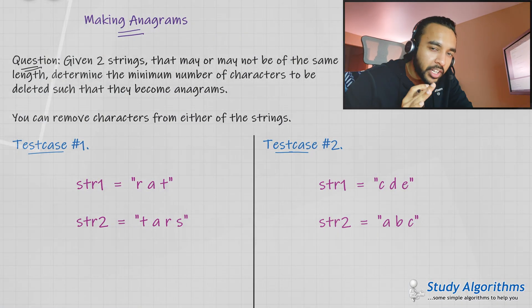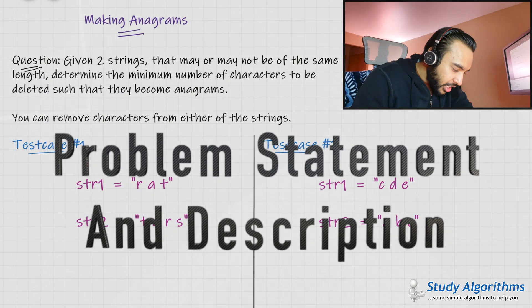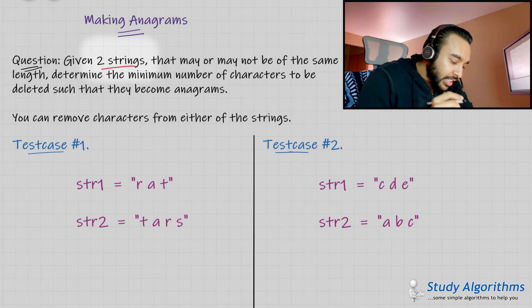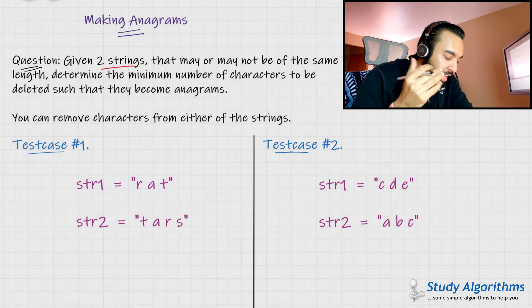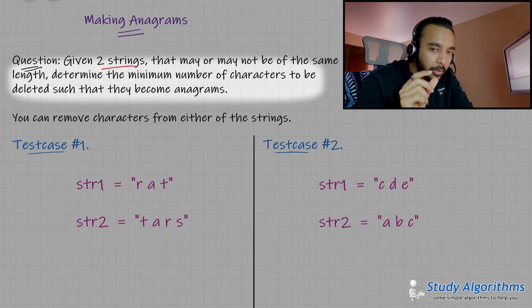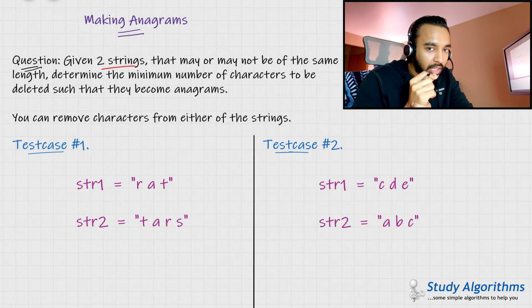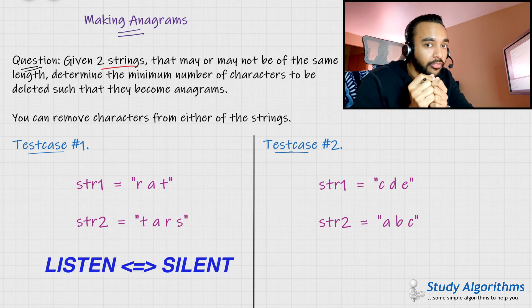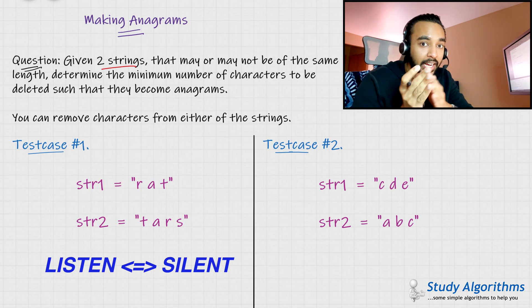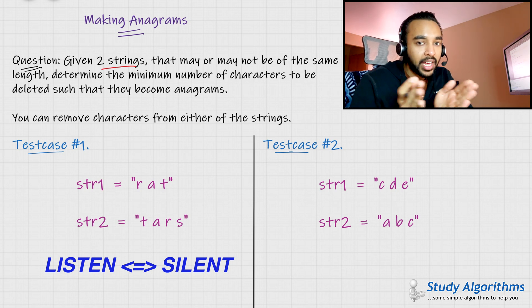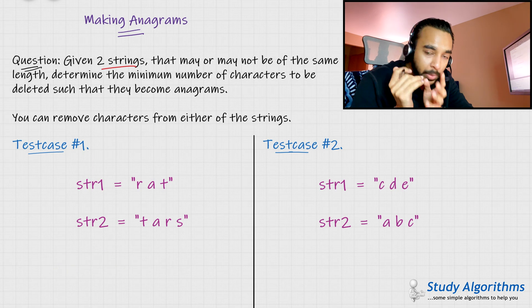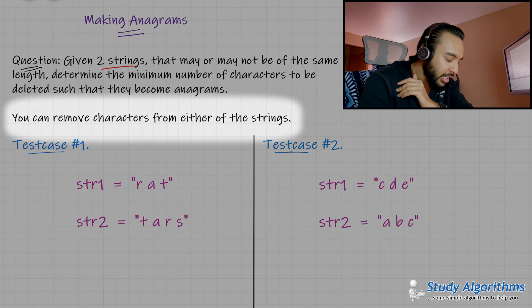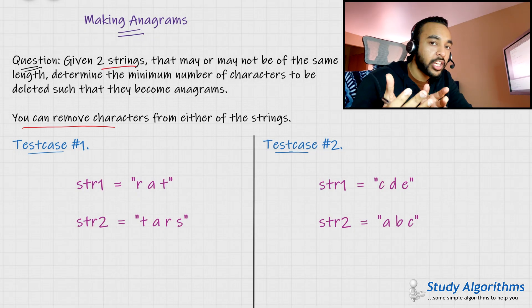Let me try to simplify the problem statement for you first. You are given two strings that may or may not be of the same length, and you need to determine the minimum number of characters that you can delete such that they both become anagrams. Two strings are said to be anagrams if they have the exact same number of characters and their frequencies. For example, the words 'listen' and 'silent' are anagrams of each other. To make this problem a little easier, you are also given a condition that you can remove characters from any of the strings.